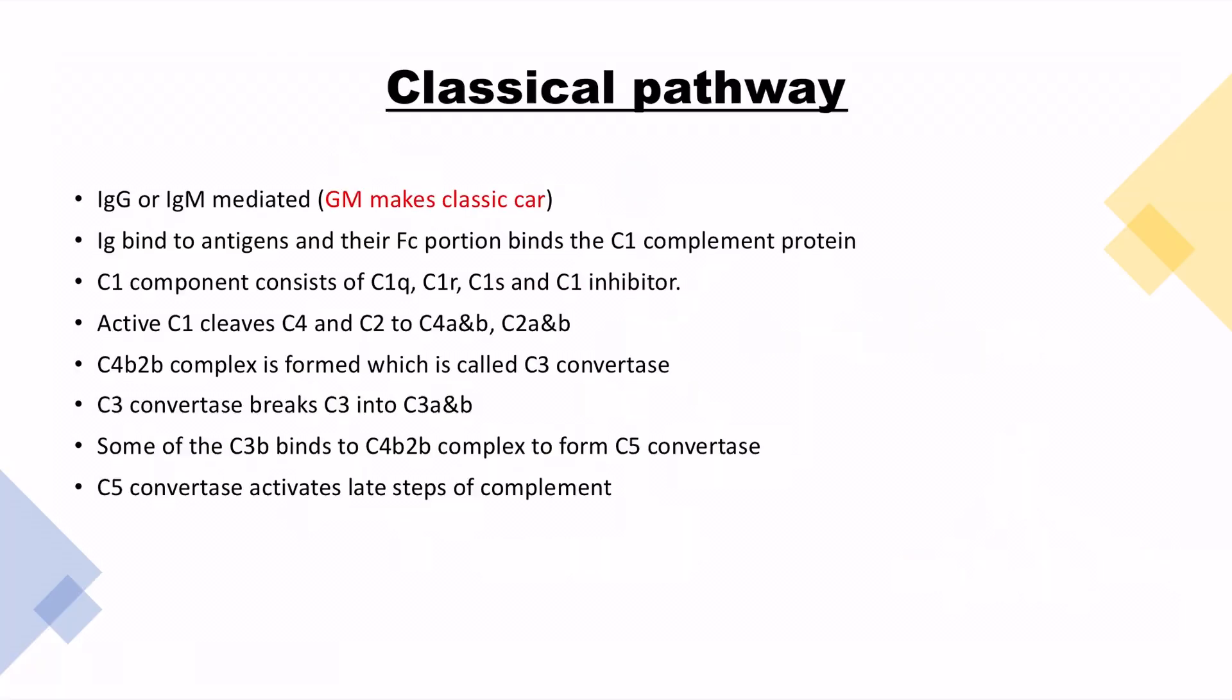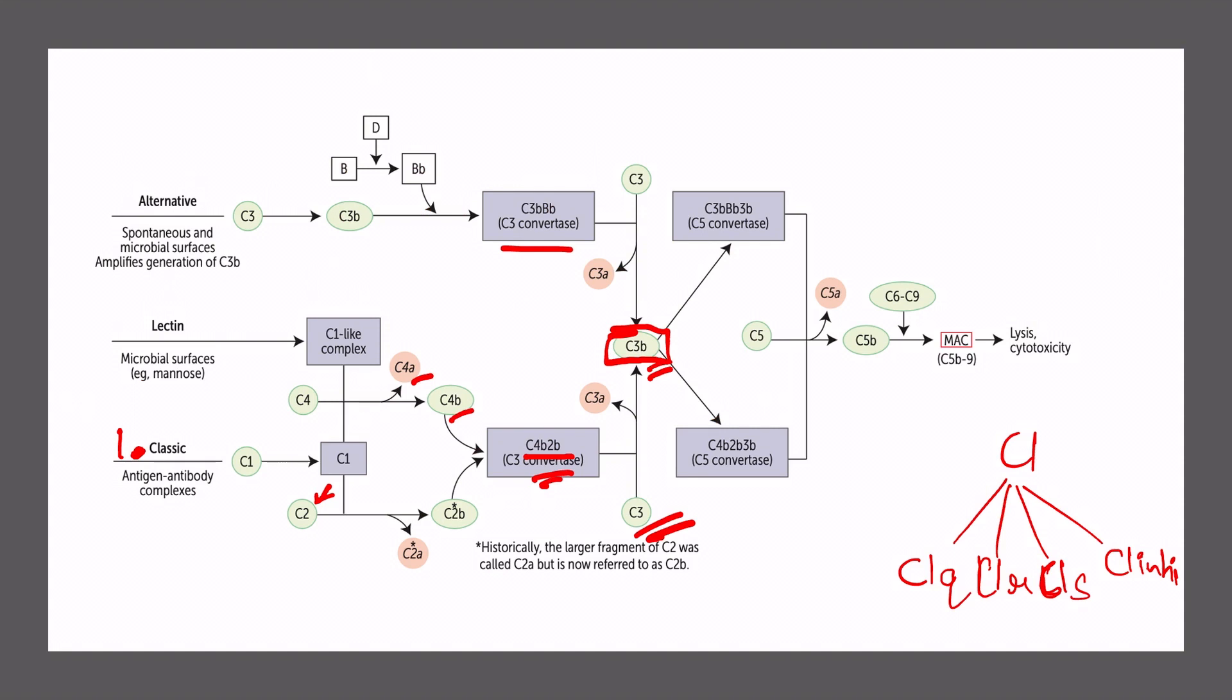Classical pathway in a nutshell requires active C1 complex that breaks both C4 and C2 to form C3 convertase. Further, C3 convertase will break C3 complex into C3A and C3B. Some of the C3B binds to C4B2B complex to form C5 convertase.